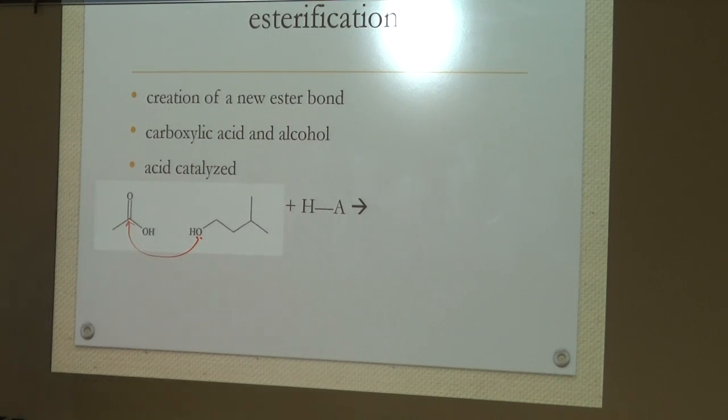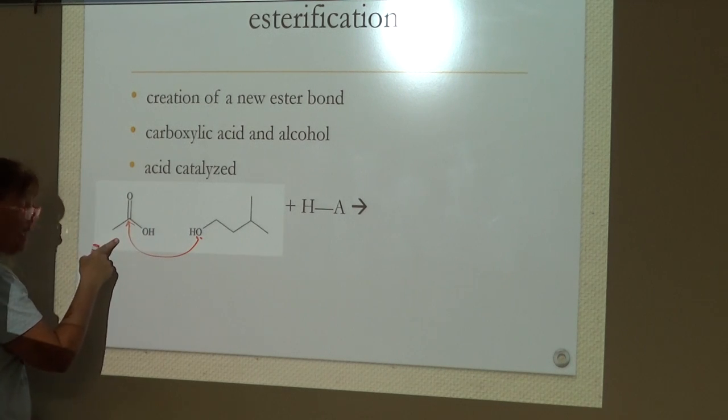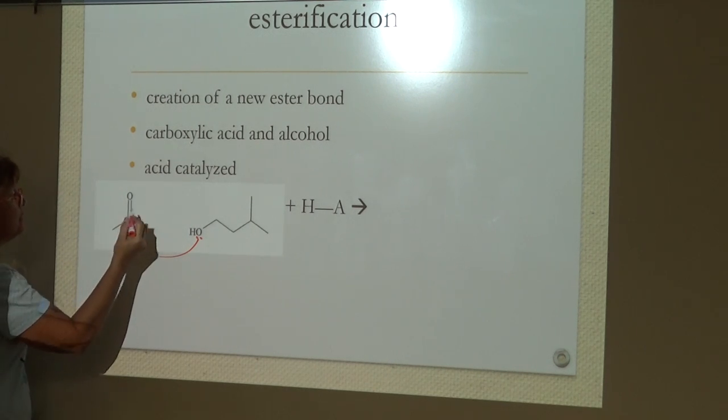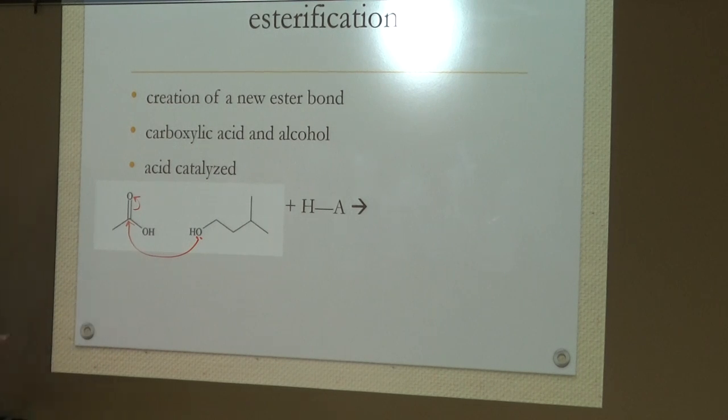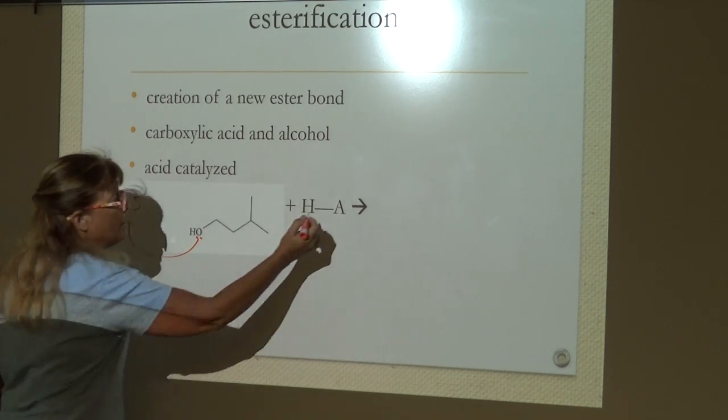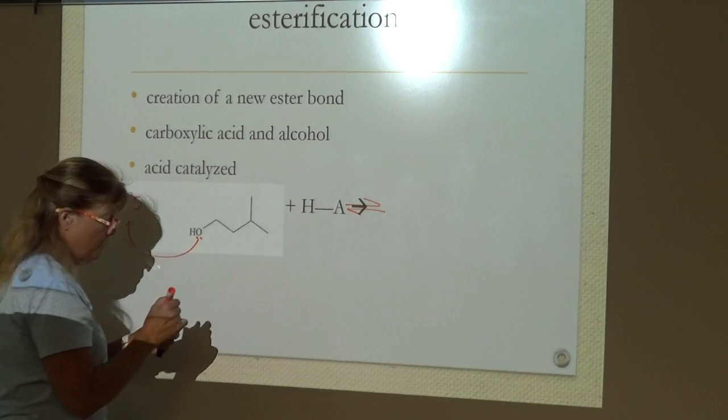Here again they're donated to the carboxyl carbon. That carbon already has four bonds, so something's got to give, and that would be the pi bond. Here again, pi bonds are weaker than sigma bonds, so that's what gives first.